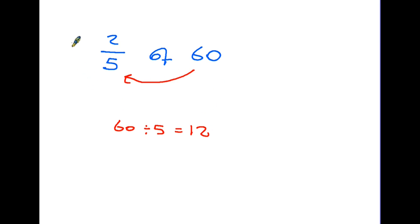But we don't want one-fifth, we want two of them. So the second step: multiply by the top, and we have the answer 24. So step one, divide by the bottom. Step two, multiply by the top.